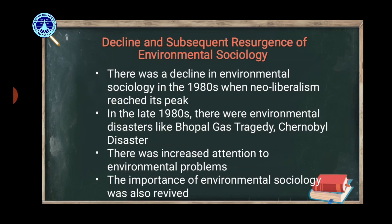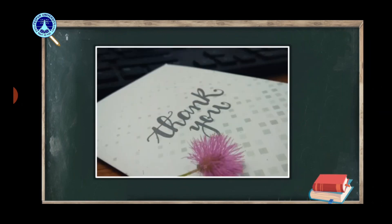By now you have understood how environmental sociology emerged and why environmental issues should be given importance in sociology. Before I wind up the lecture, let me briefly tell you in simple words what environmental sociology is. In simple words, environmental sociology may be defined as the study of the links between the environment and society — or we can say societal-environmental interactions. There is a constant interaction between human beings and the environment: while human activity influences the environment, the environment influences human life. These interactions are studied by environmental sociology. That's all I have in this lecture. Thank you.